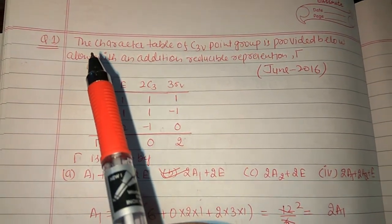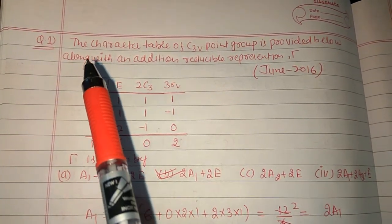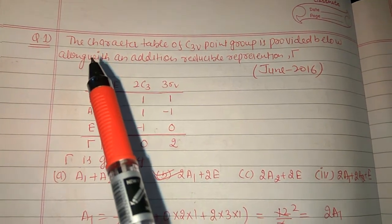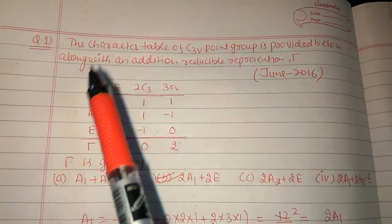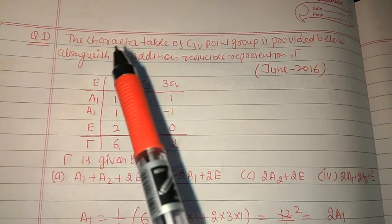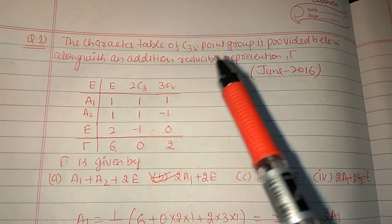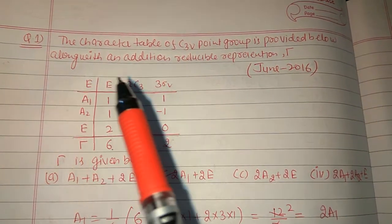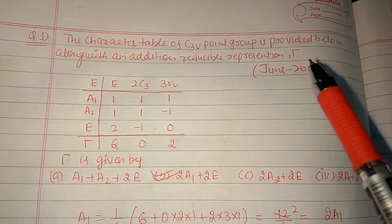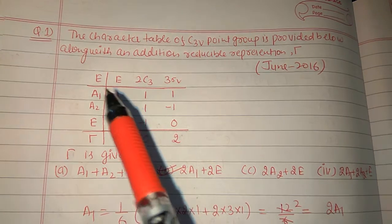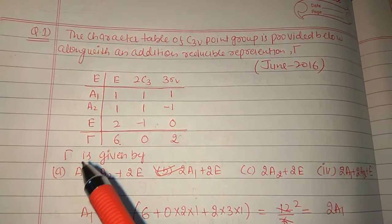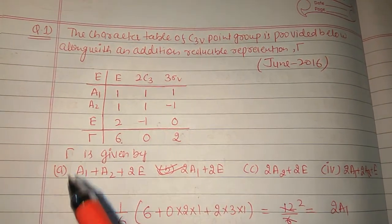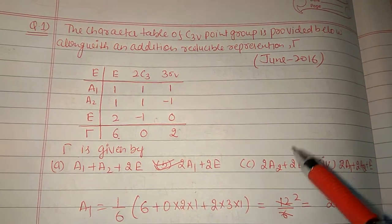Today we will discuss a question on group symmetry theory. According to this question, we have to find the reducible representation. The character table of the C3v point group is provided, along with an additional reducible representation, and we have to find the exact reducible representation.